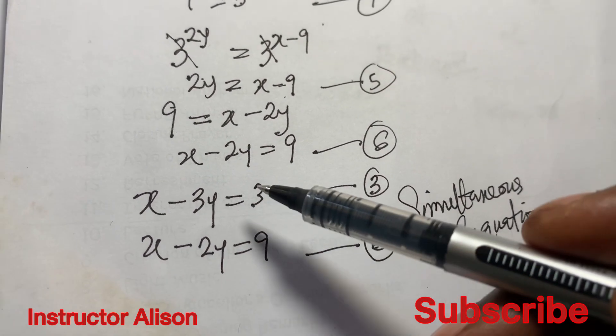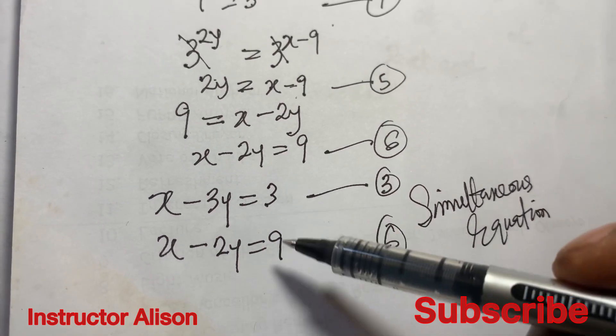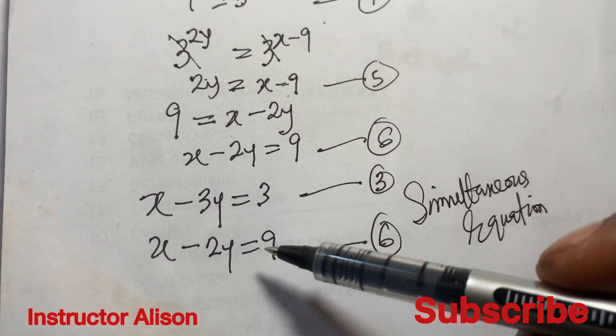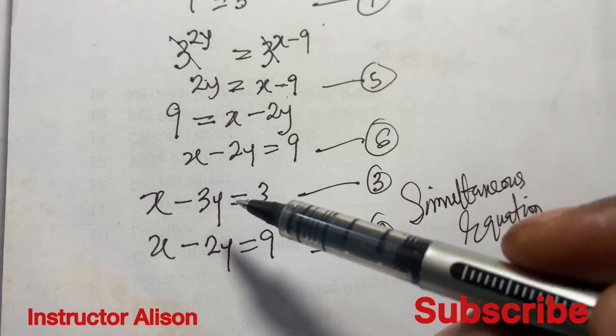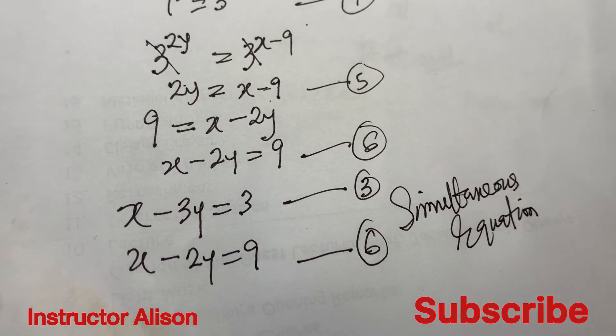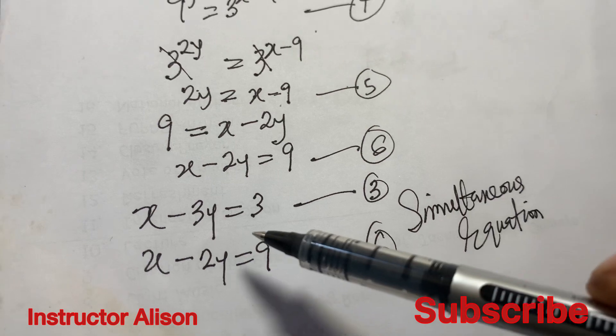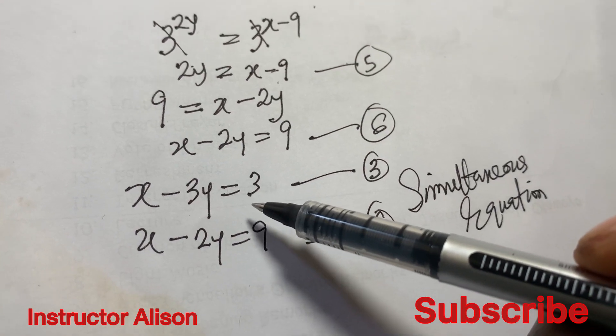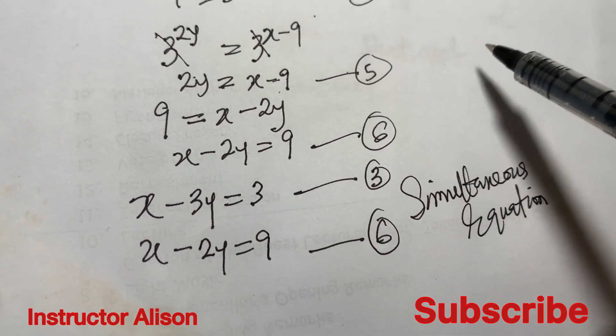In simultaneous equations we have several methods. You can use the graphical approach, elimination method, substitution method, or Cramer's rule to get the determinant of this matrix. In the next video I'm going to give you the completion of this problem.